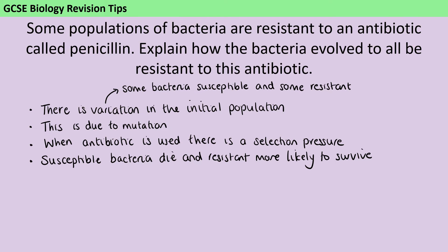Just surviving is not enough. If you're simply doubling your lifespan but not reproducing, we won't see that change. What the bacteria need to do is survive and then produce offspring. When they reproduce, the bacteria are going to pass on the alleles that made them resistant to the penicillin to their offspring.